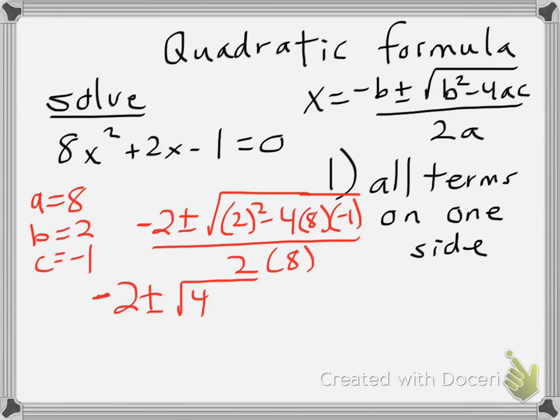And since I have 4 times 8 times negative 1, that becomes a negative 32, so minus a negative makes it plus 32, all over 16.